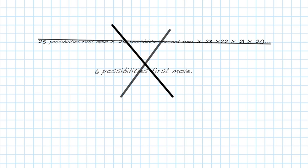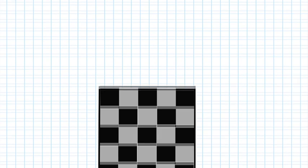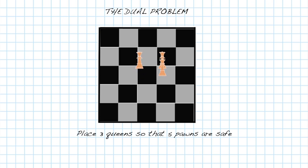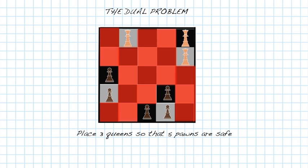It turns out that there's an even better method. Instead of putting down five queens so that three pawns are safe, let's consider the dual problem. Let's put down three queens so that five pawns are safe. What's nice about this is we're now looping on just three objects, three queens as opposed to five queens.